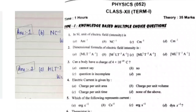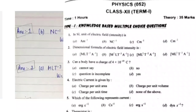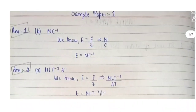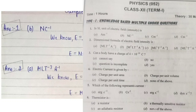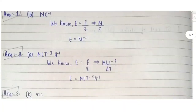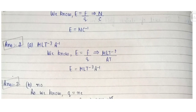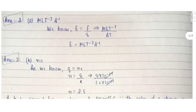First question: the unit of electric field. The unit of electric field is newton per coulomb, so option B is the right answer. Second question is the formula for electric field intensity — that is option A.